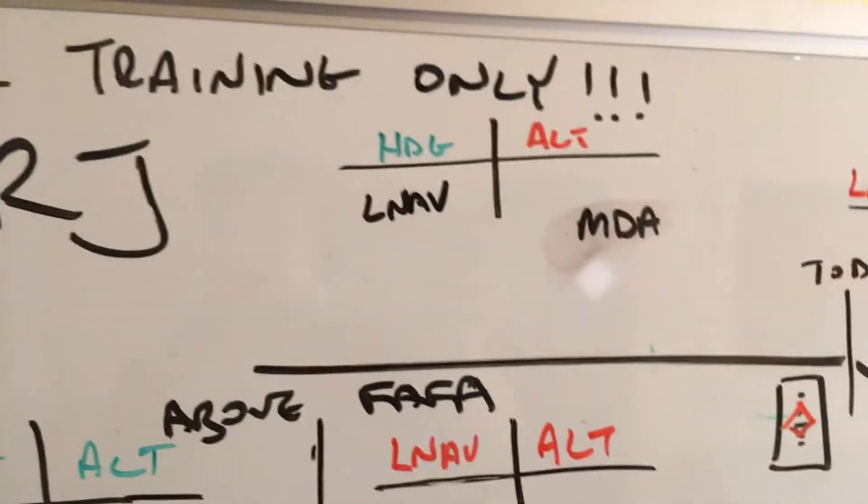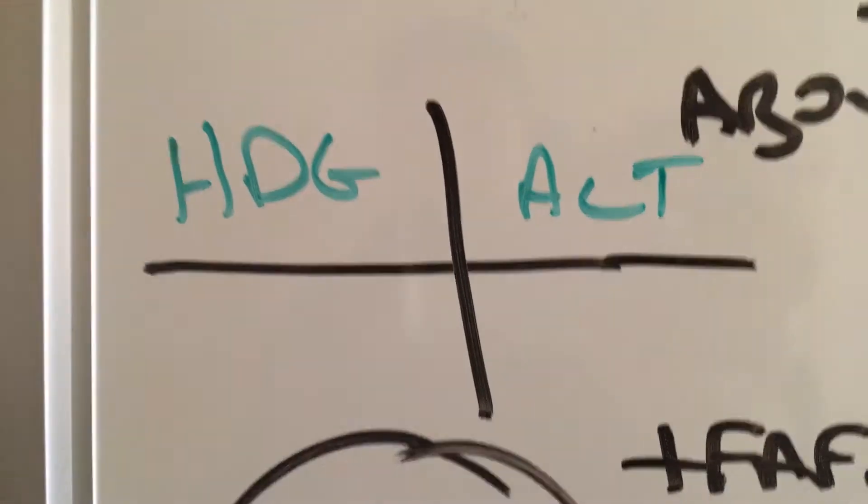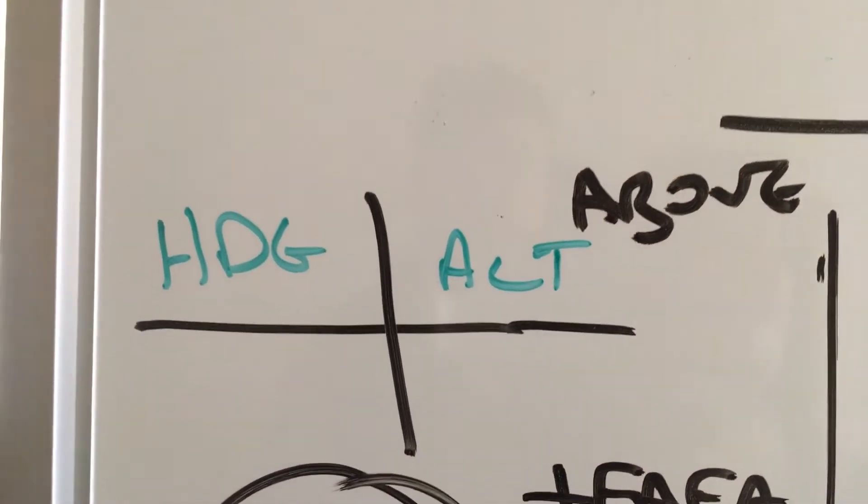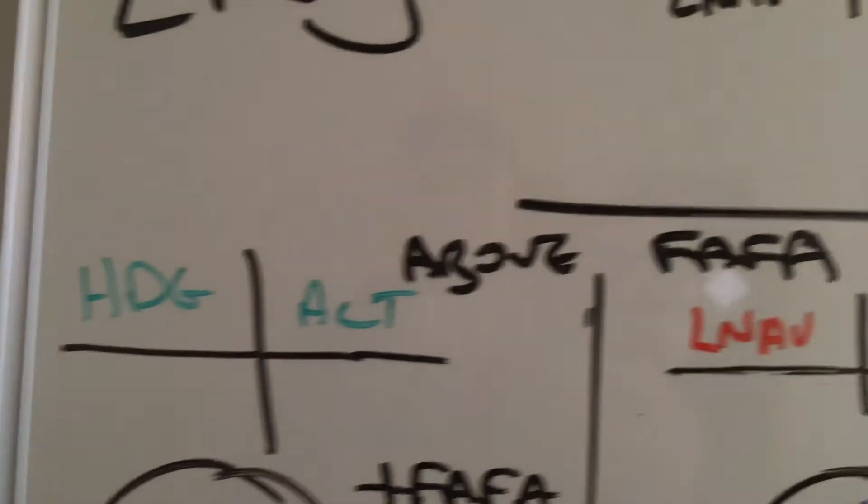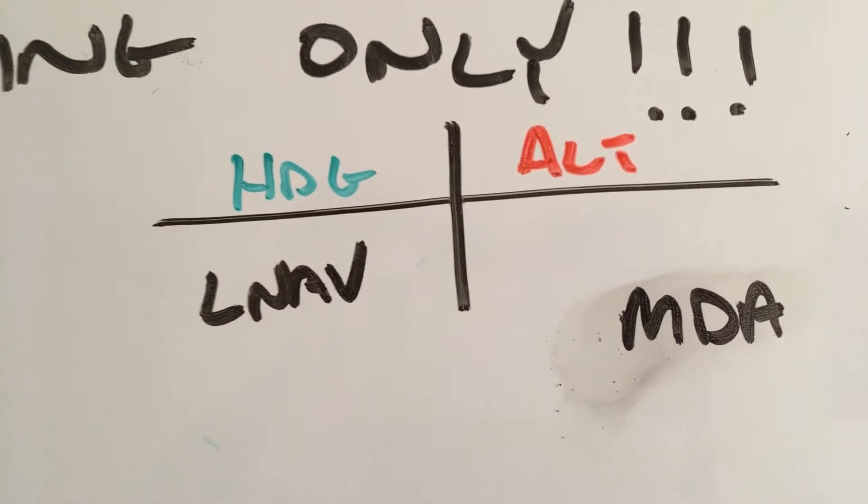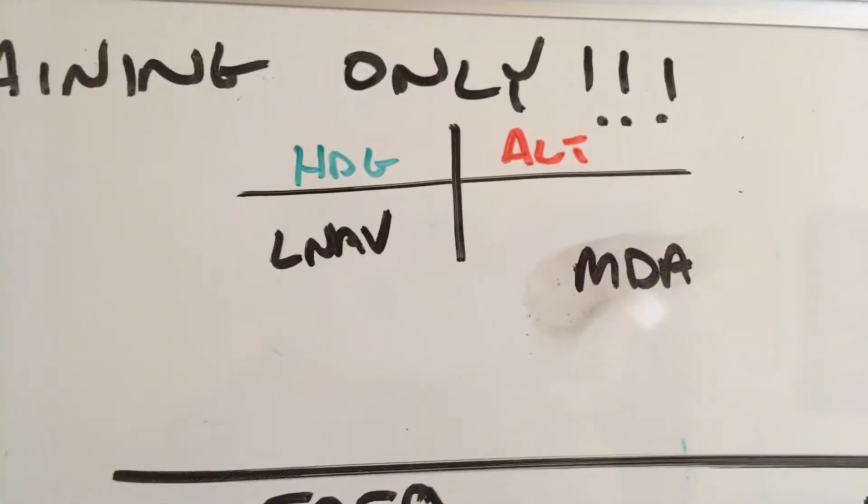We set MDA. And then we take a look at our flight mode enunciator panel and we see that altitude's green. We're going to use path to get ourselves down, so we need to turn VNAV on. And when we press VNAV, we'll get a magenta altitude, and then we'll select NAV and LNAV will be armed.